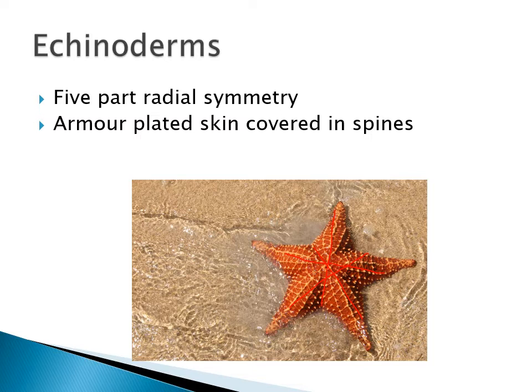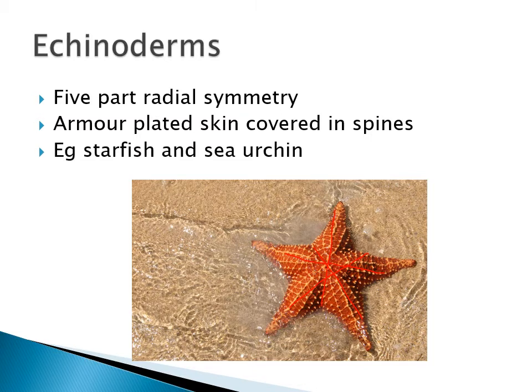Also, echinoderms are armor plated with covering spines. These animals don't move very often, so they need protection from predators. The tough spines make it very difficult for any predator to eat them. Examples include starfish, sea cucumbers, and sea urchins — all different examples of echinoderms.